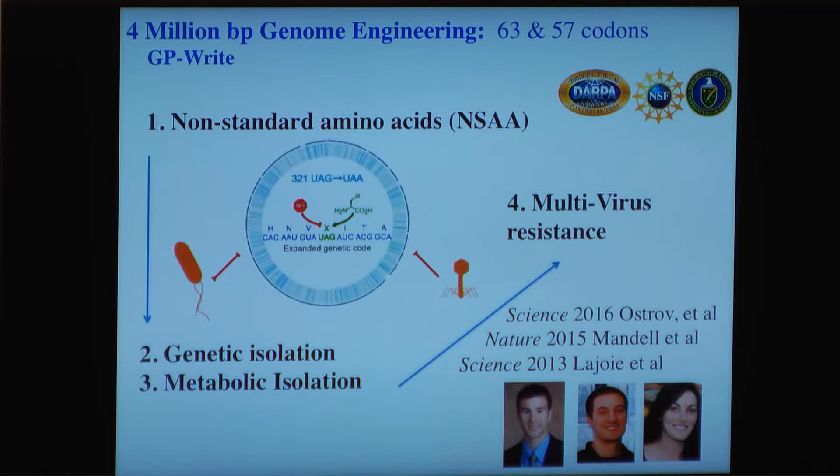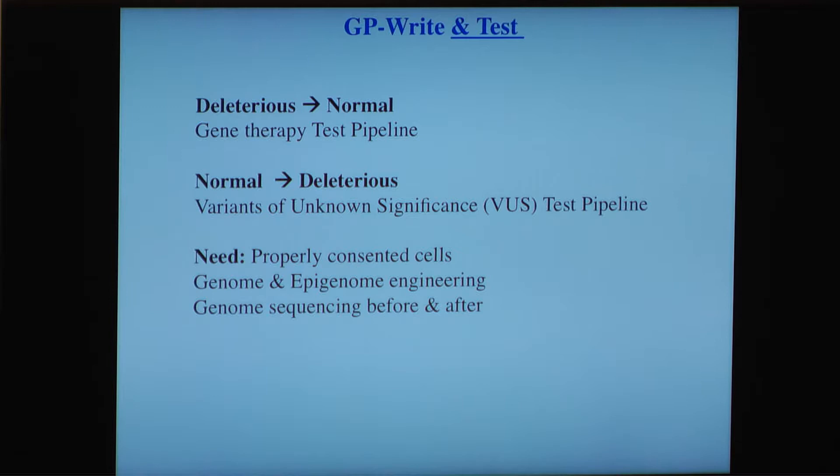Nilly will tell you more about engineering a four-million base pair genome for four goals: non-standard amino acids, genetic and metabolic isolation for biocontainment, and multivirus resistance. It's very profound that these cells can be resistant to all viruses — even some we've never seen before.